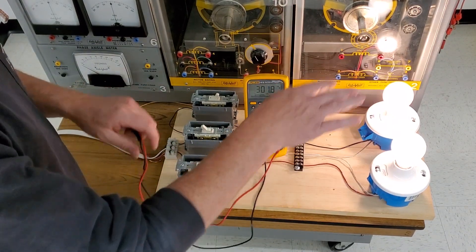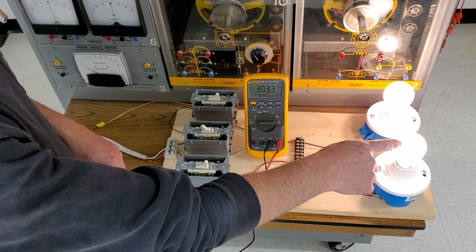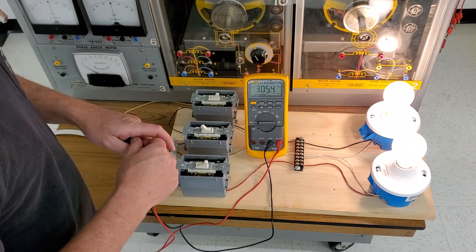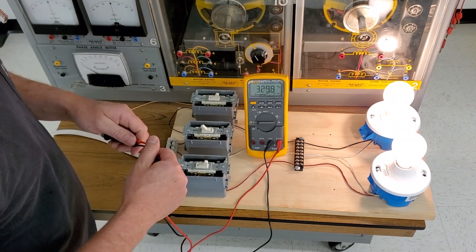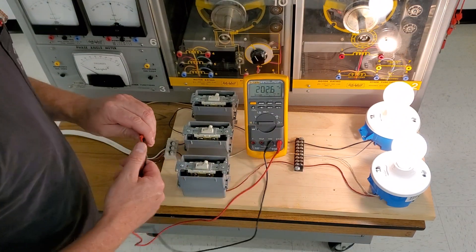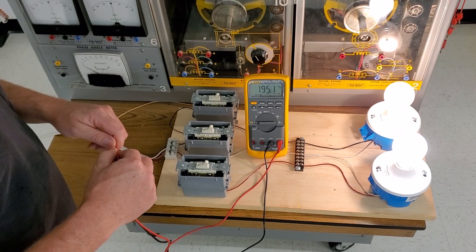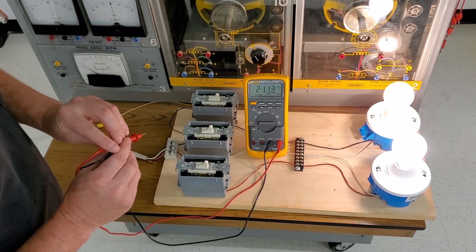So always be careful when you're in a multi-wire branch circuit that if you lose your neutral, you put your loads in series. And I've seen this happen on the job site.